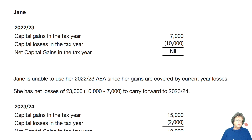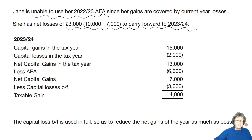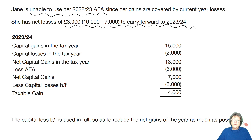Jane had gains in 2022-23 of 7,000 and losses of 10,000. For the gains that year, you always write in nil. Her AEA has been lost and she has losses to carry forward to the next year. In 2023-24 she had gains of 15,000 and losses of 2,000, giving net gains for that tax year of 13,000. After the AEA of 6,000, that leaves net gains of 7,000, with the losses brought forward now used in full.